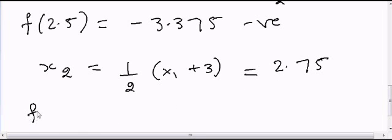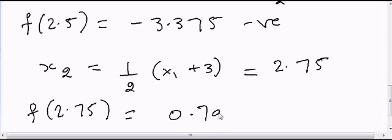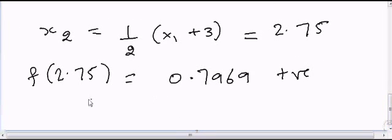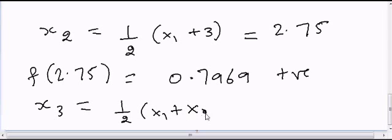Now I will solve for f(2.75) = 0.7969. This is closer to 0, but it's a positive number, so I will go for one more approximation. x3 = (x1 + x2)/2 = 2.625.